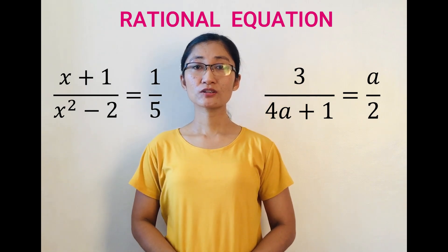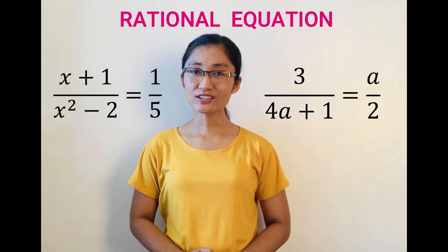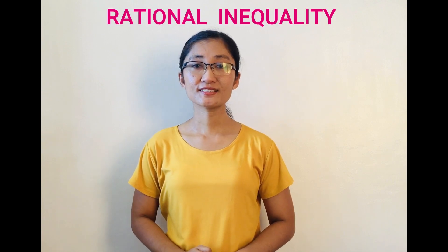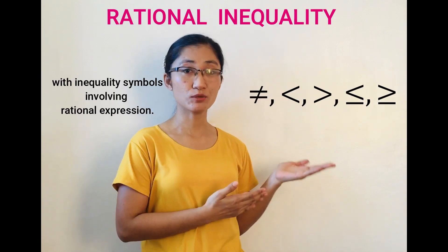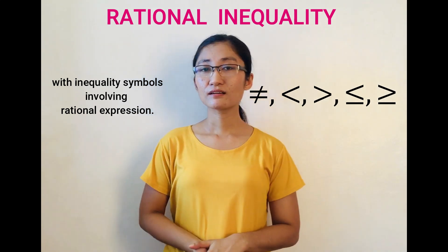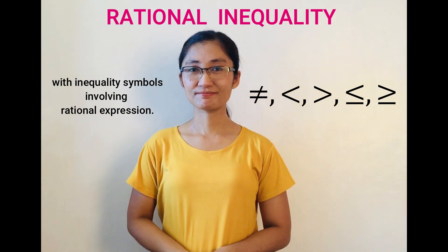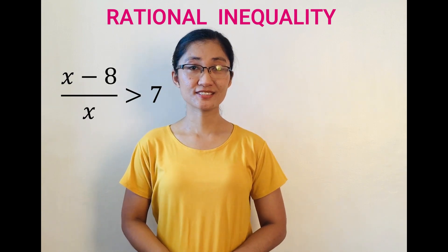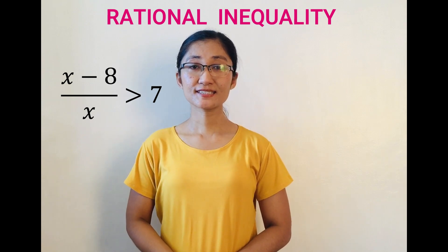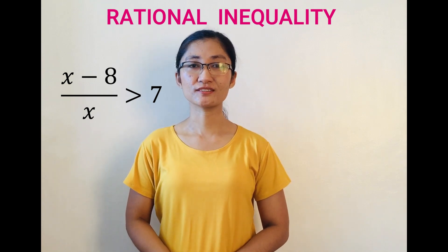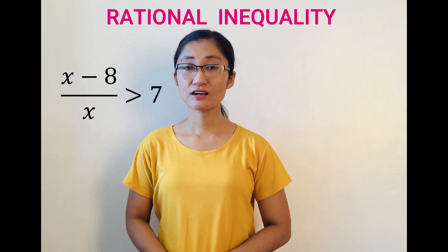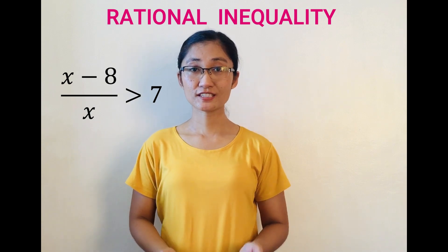Both of them contain rational expressions or a fraction or quotient of two polynomials. Meanwhile, a rational inequality is an inequality involving these inequality symbols, of course, and it involves a rational expression. So for example, (x-8)/x > 7. It is a rational inequality since it has a rational expression. x-8 and x are both polynomials, so it is a rational expression, and it involves an inequality symbol which is greater than symbol in this case.